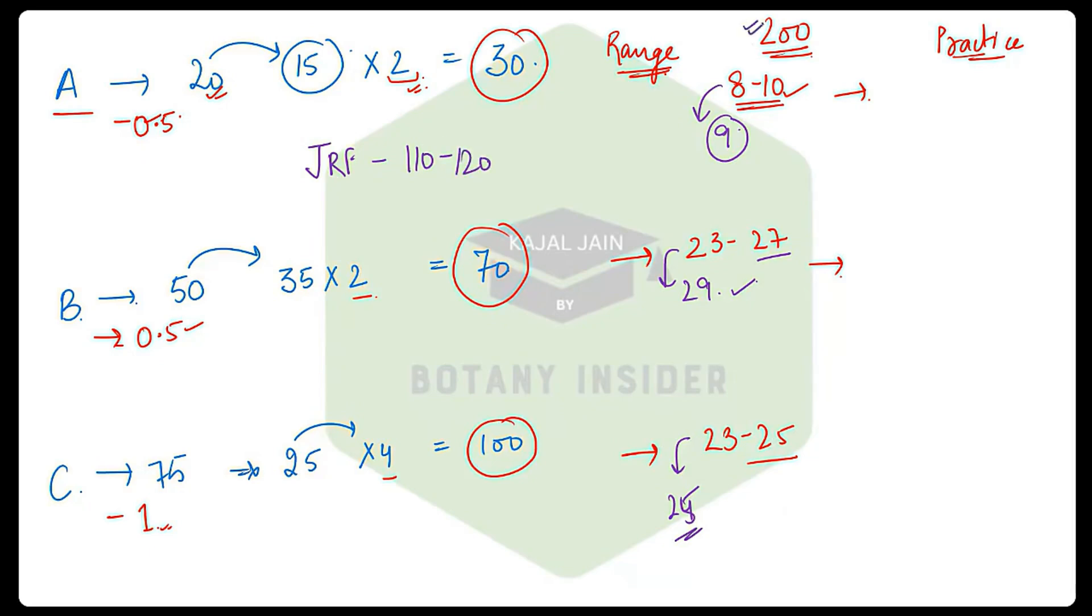For LS it is 99 to 105—sometimes it's 101, sometimes 100. This is for the general category; different categories have different ranges. General has the highest cutoff, so let's take that into consideration.